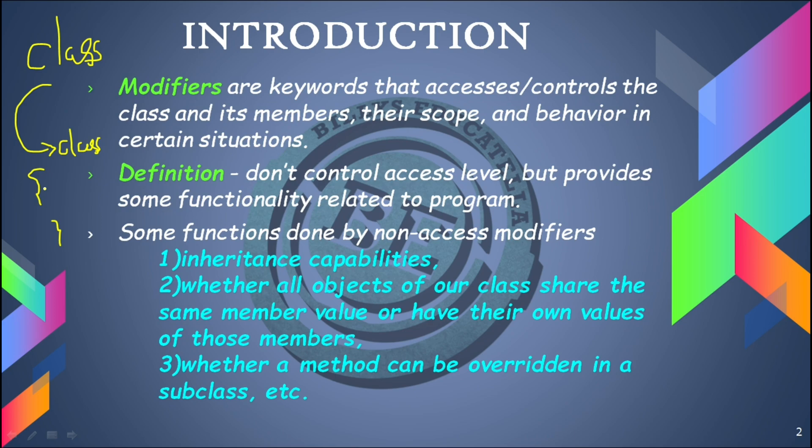The second function is whether all objects of our class share the same member value or have their own individual values. For example, objects can provide different values to different methods. By using non-access modifiers, we can provide either a different value or the same value to the members of that particular class.